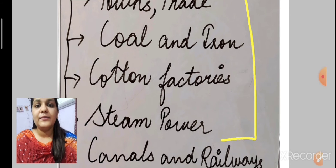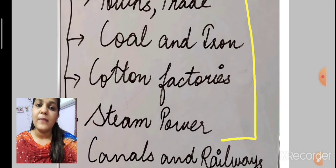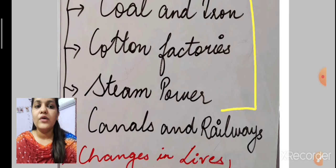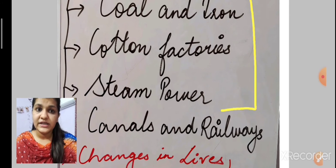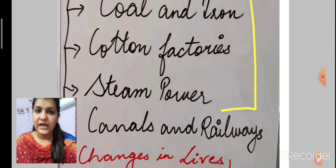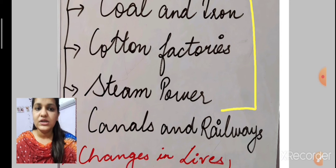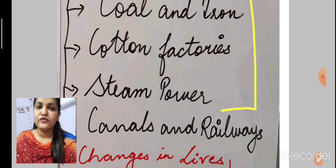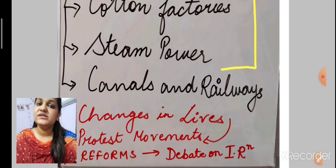We see the coming up of new technologies in coal and iron, and a lot of improvements in cotton factories, which is why we see mass manufacturing. We will read about the inventions of steam power, how it happened, and how it further led to the revolution of railways. Plus, there were canals and new modes of transportation as well. This is basically the contents of our chapter.